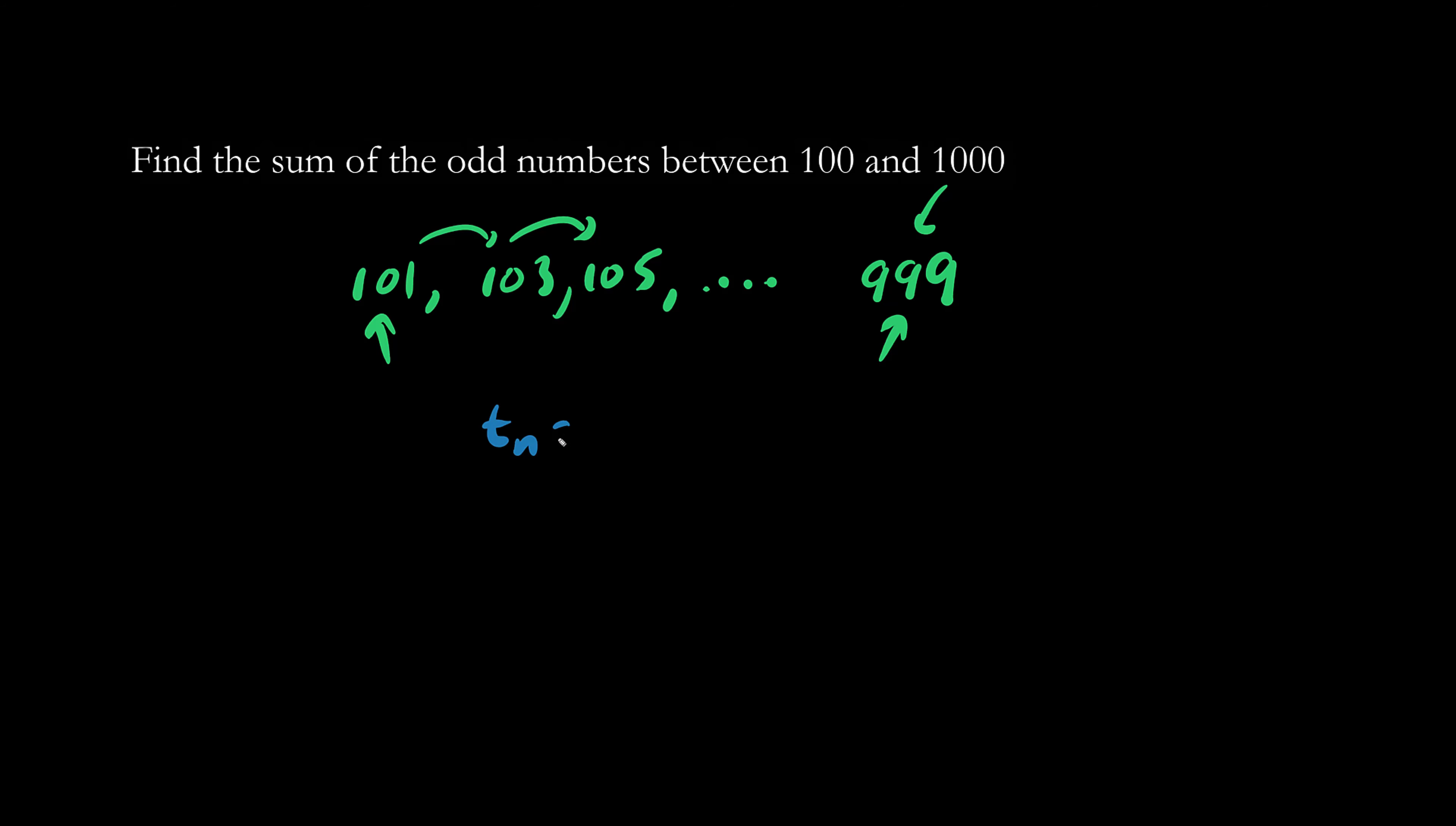Recall the formula Tn equals T1 plus n minus 1 times d. Focusing on the last number here, this is your Tn, we have 999 equals 101 plus n minus 1 times d. The common difference is 2.